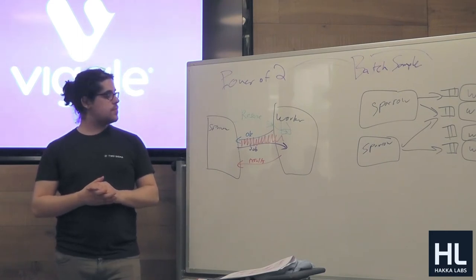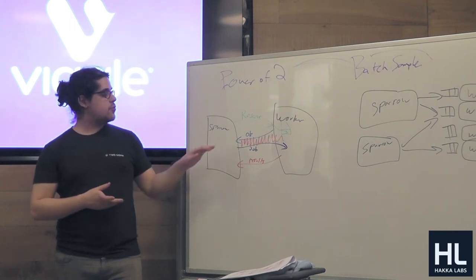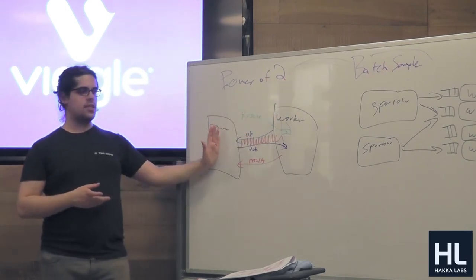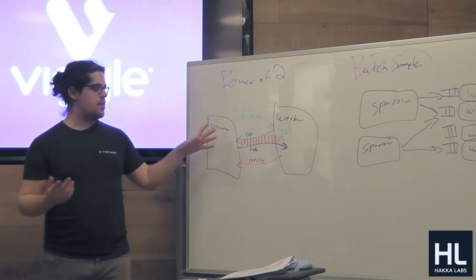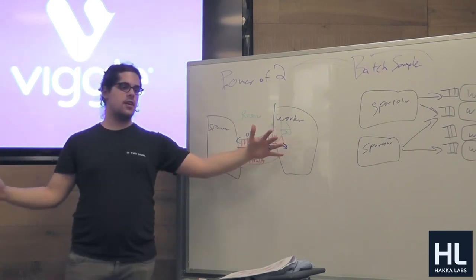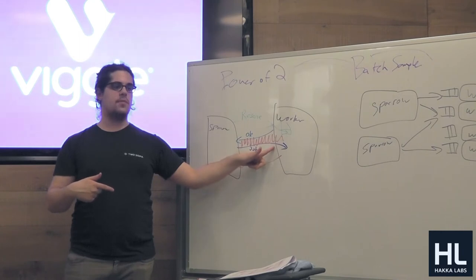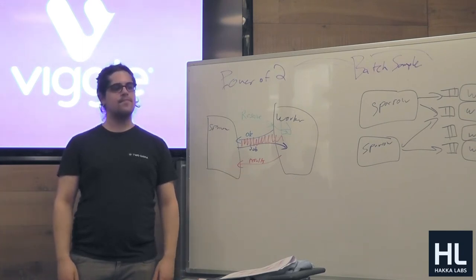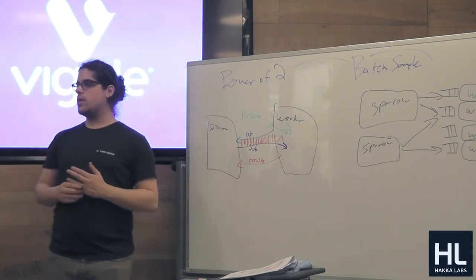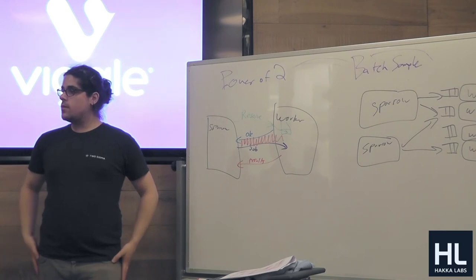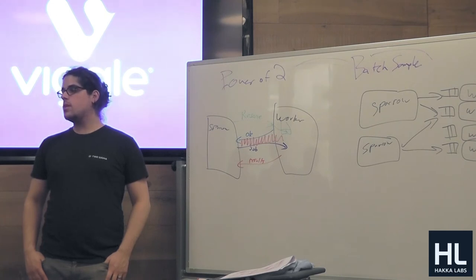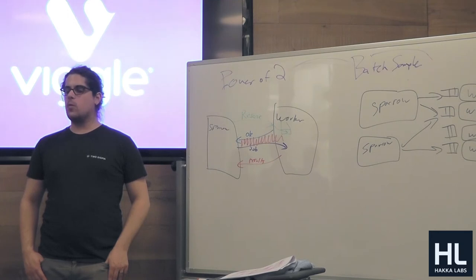Question: does Sparrow reserve a task on one worker or multiple? The reservations replace the probes. When Sparrow gets a job of 1,000 tasks, it makes 2,000 reservations. The first 1,000 'okays' it receives run the jobs; the second 1,000 are ignored. Could you just send the job directly instead of a reservation? A probe is on the order of bytes; a job is kilobytes — so sending the job upfront means more communication overhead for the extra thousand copies.